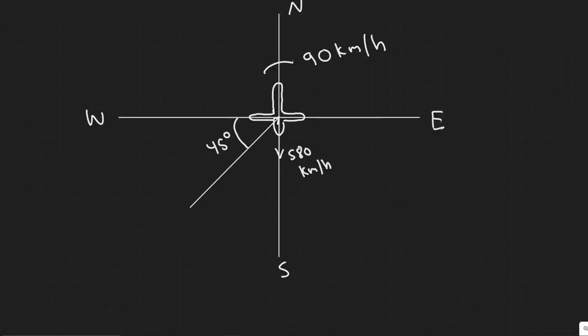In this problem, an airplane is heading due south at a speed of 580 kilometers per hour. A wind begins blowing from the southwest at a speed of 90 kilometers per hour on average. We need to calculate: a) the velocity magnitude and direction of the plane relative to the ground, and b) how far from its intended position it will be after 11 minutes if the pilot takes no corrective action. First, draw a diagram.